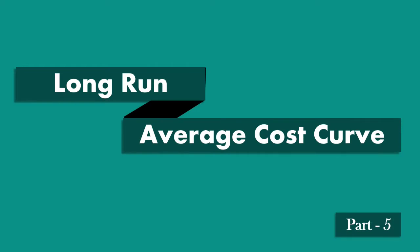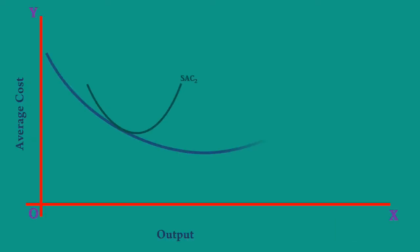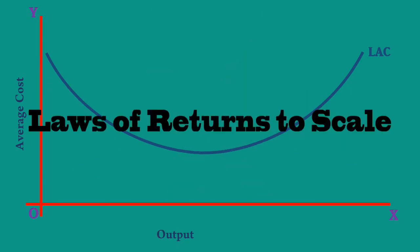Long Run Average Cost Curve Part 5. Like Short Run Average Cost Curve, Long Run Average Cost Curve is also U-shaped. But the reason for the shape of the Long Run Average Cost Curve is different. It can be found in the Laws of Returns to Scale.